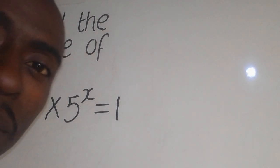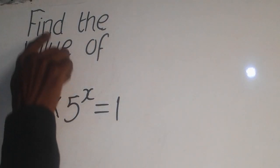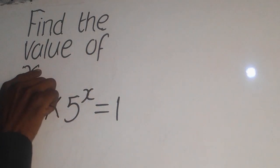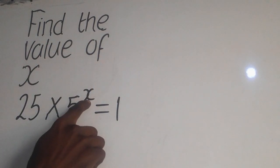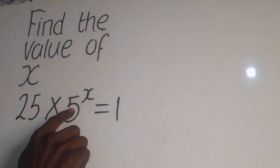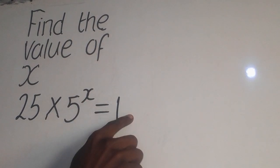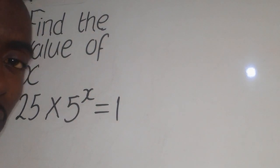So we have a mathematics question that says find the value of x, this x here. So we are given 25 times 5 to the power x equal to 1. Now you need to understand that the first step here we need to divide both sides by 25.